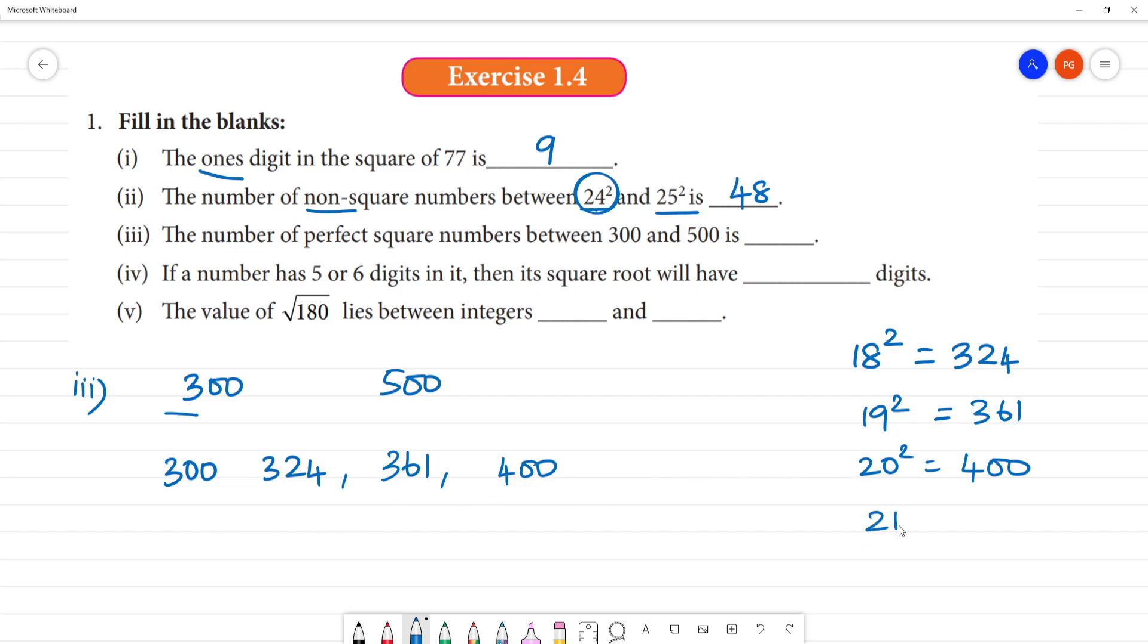18 square is 324. 19 square is 361. Next is 20 square. Then 21 square is 441. 22 square is 484. Above that it goes above 500. So how many? Number of perfect squares is 1, 2, 3, 4, 5. So that is 5.